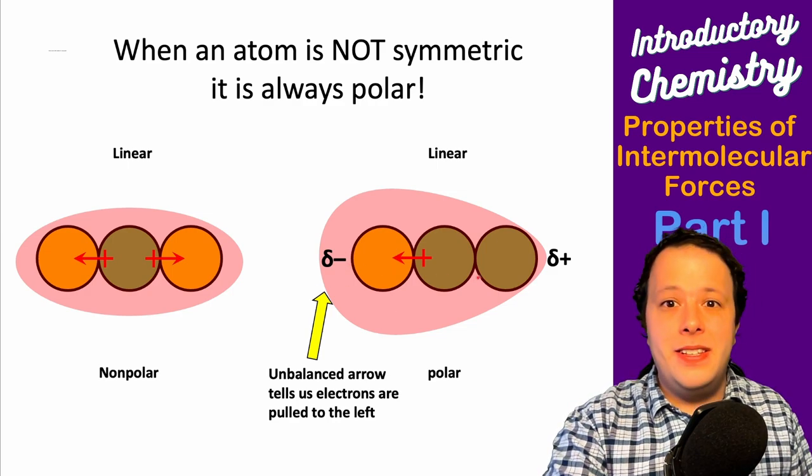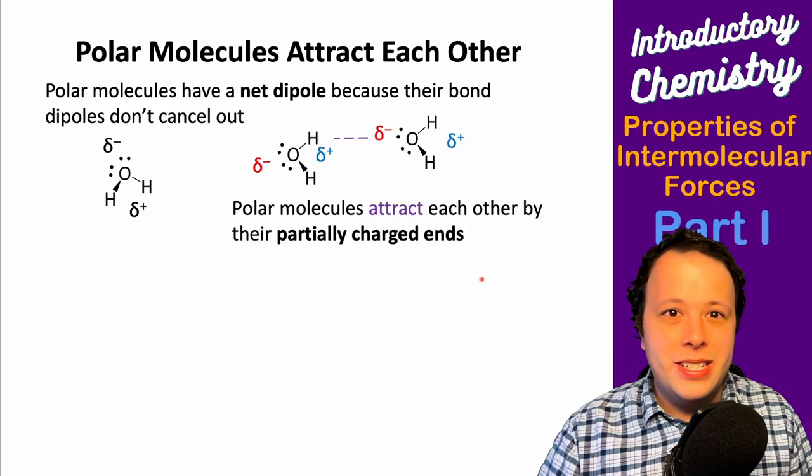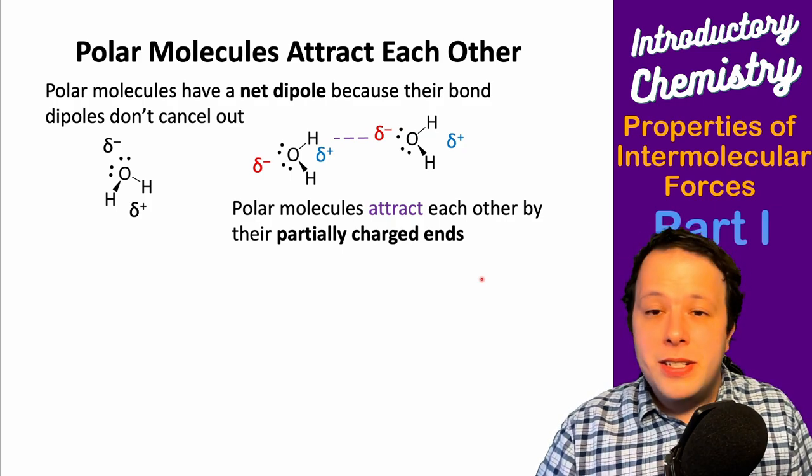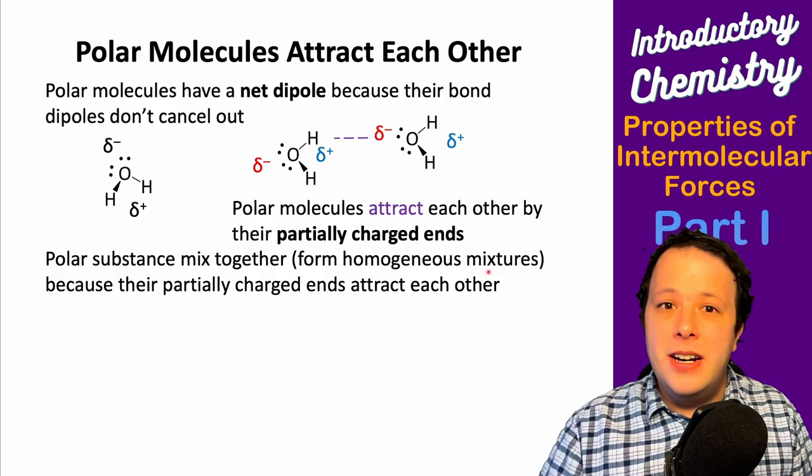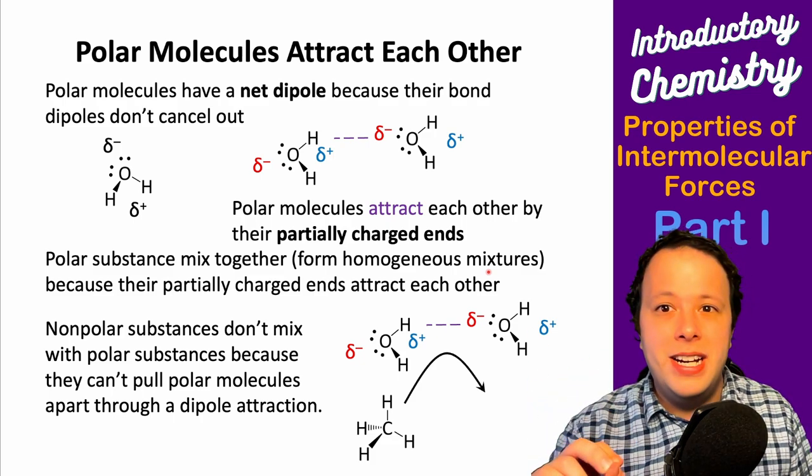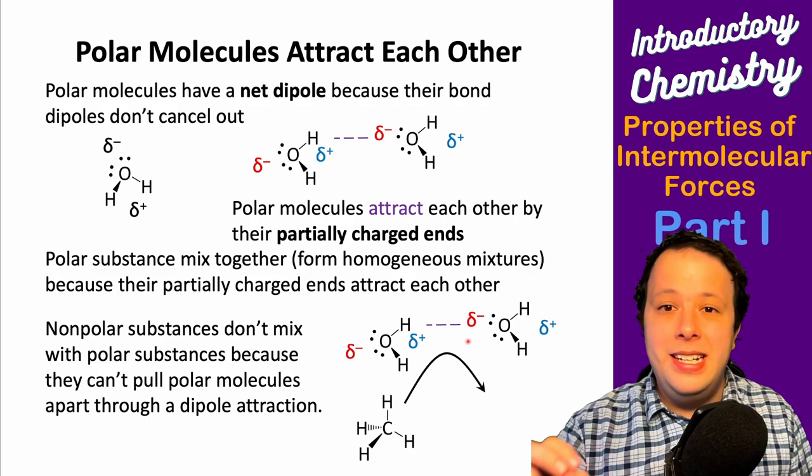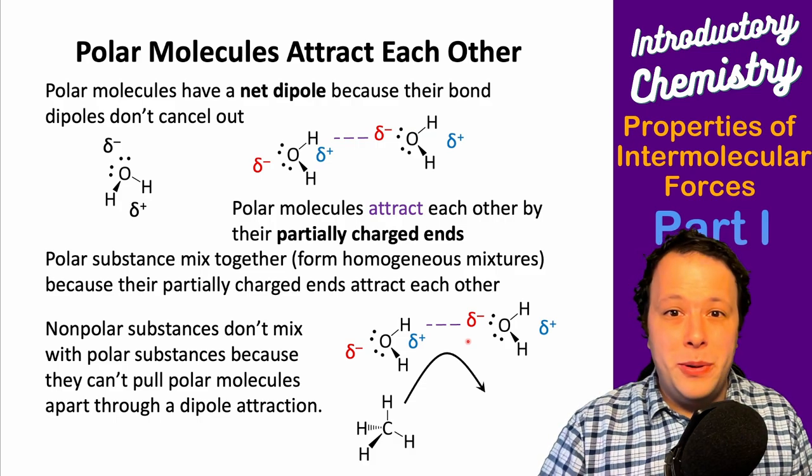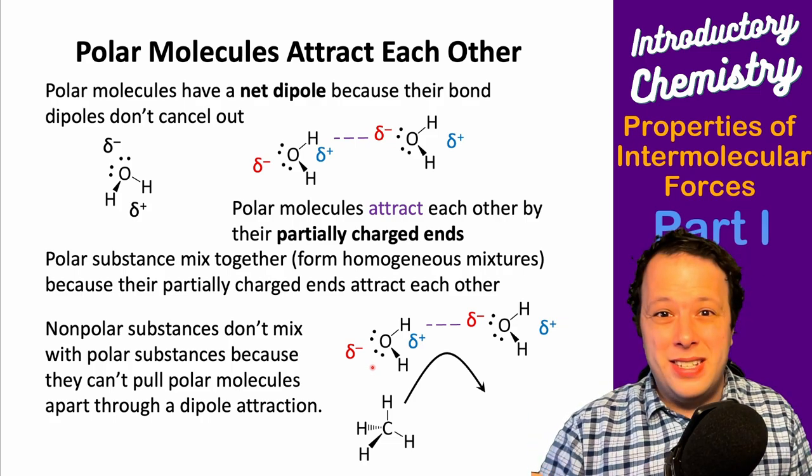When we have this uneven sharing, we create a dipole. We have delta negative and delta plus, and if you have multiple molecules that are similar—polar and polar—they will attract each other. When this happens, the properties of different compounds change. This is how we make homogeneous mixtures from complete mixing. Like dissolves like—this phrase comes into play.